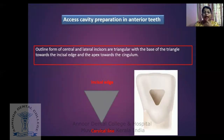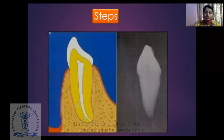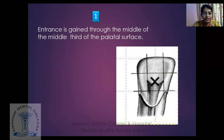Coming to access cavity preparation in anterior teeth. The outline form of central and lateral incisors is triangular, with the base of the triangle towards the incisal edge and the apex towards the cingulum, as seen in the diagram. You have to segregate the tooth into quadrants and gain access through the middle of the middle third of the palatal surface. Otherwise there are more chances for perforations. Approaching in this direction, we can reach the pulp easily, and it all depends on the angulation of the tooth.